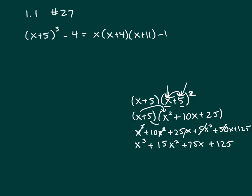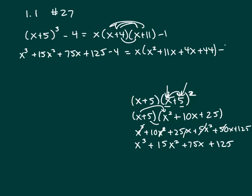So x plus 5 cubed is x cubed plus 15x squared plus 75x plus 125 minus 4 equals. So now let's multiply these two together. So bring down the x. And then x times x is x squared plus 11x.